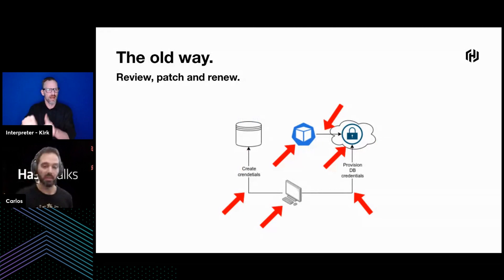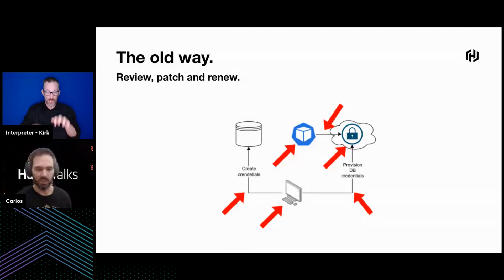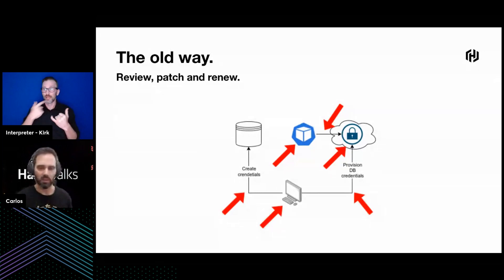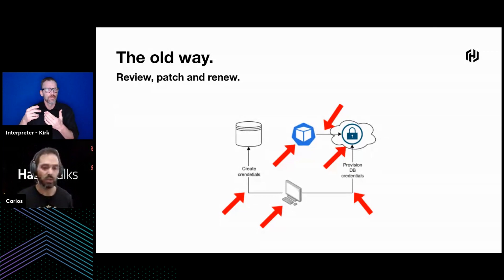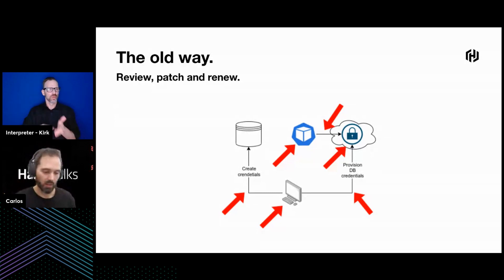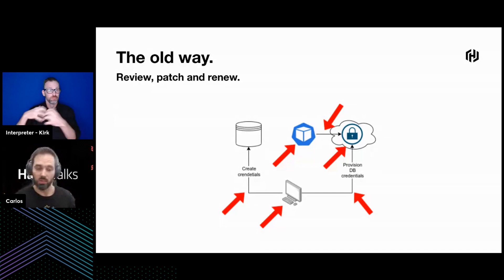The first thing is to review where the attack happened, address it, and then renew all the secrets. All the manual work that happened once now has to be done again — with the inconvenience that you might not remember how, or you might be a completely different team from the one that originally created all these credentials. Obviously you have to keep your application running, and the downtime could be huge — very inconvenient, especially if your organization is sensitive to time and money, like a stock market, where it could be very damaging.